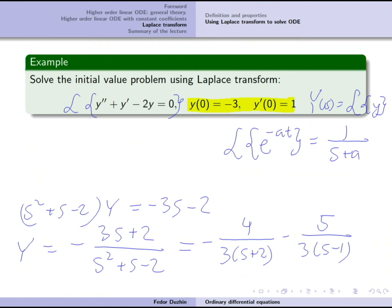We have exactly this pattern, which means the original unknown function is y(t) equals minus 4/3 times e to the minus 2t minus 5/3 times e to the t. It seems very easy on the first glance.